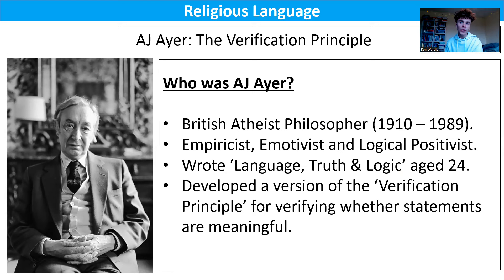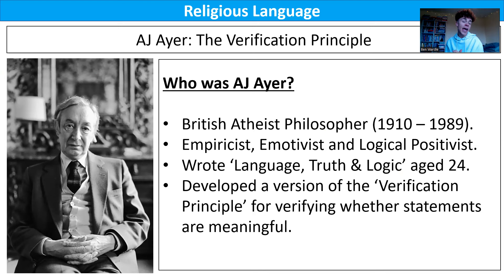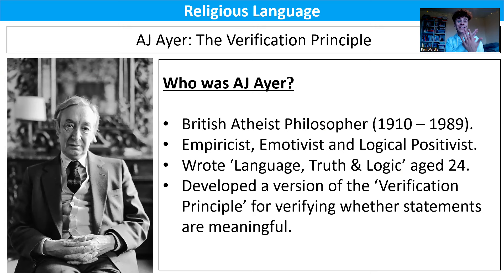Ayer was very successful academically and wrote Language, Truth and Logic aged just 24. He developed a version of the verification principle for verifying whether statements are meaningful — and the key question throughout religious language is: are religious statements meaningful? The idea of logical positivism, which originated from the Vienna Circle in the early 20th century and was later called logical empiricism, is that for a statement to be meaningful, it has to be verifiable. There are two ways you can do that — a two-pronged criteria: first, if it is analytic, meaning true a priori, true by definition — a tautology; or second, if it is synthetic, meaning confirmable by empirical observation.